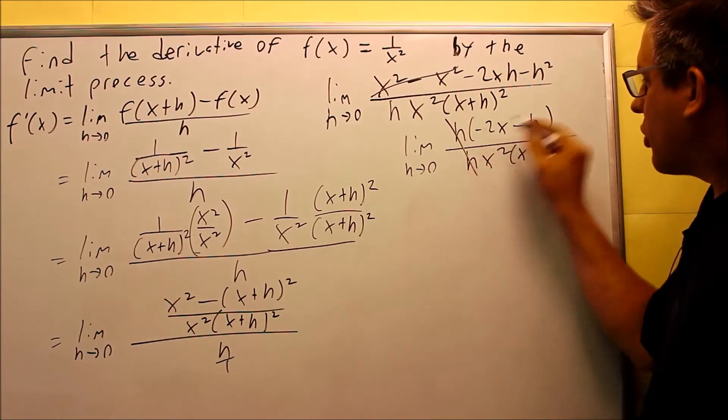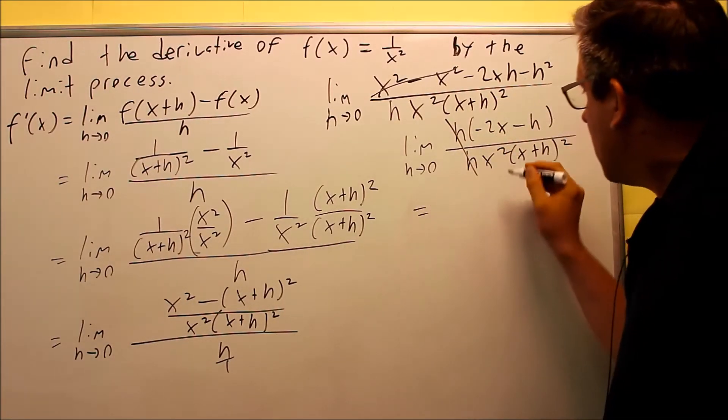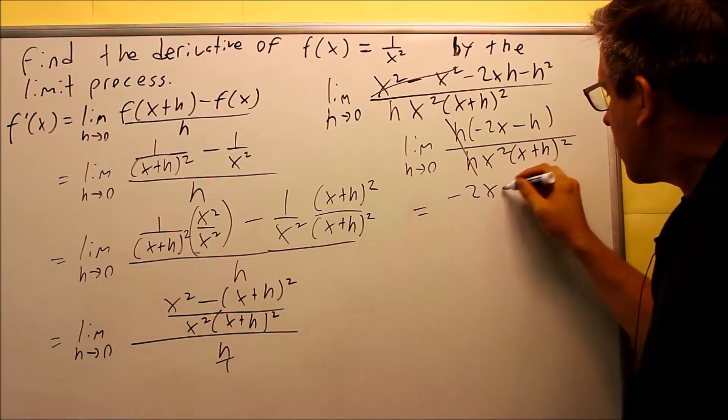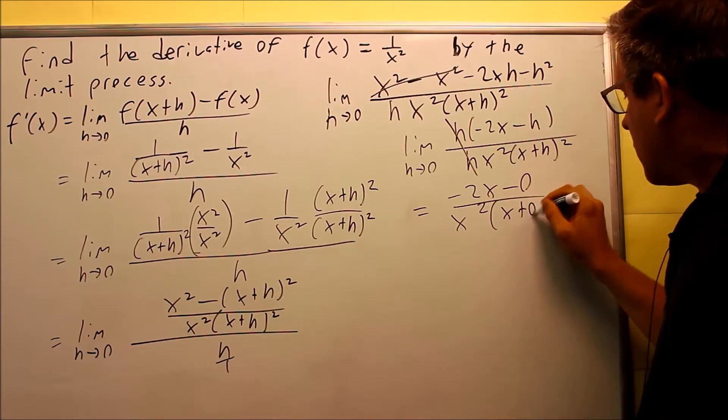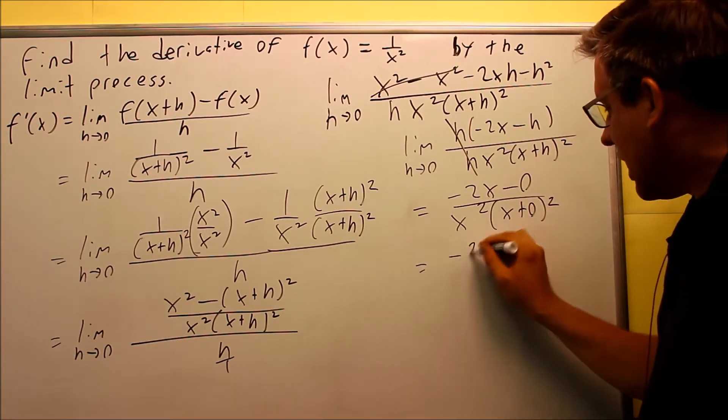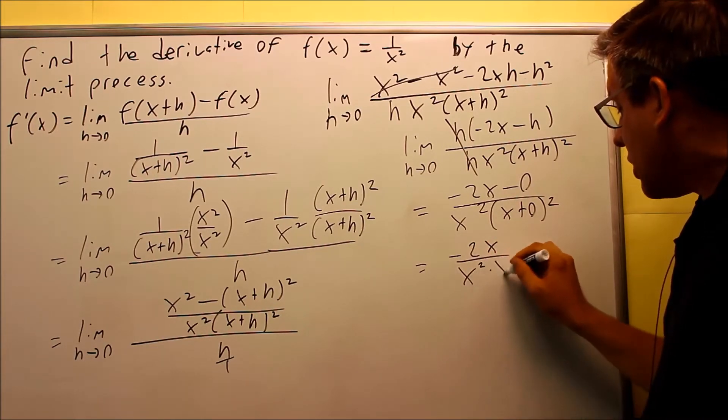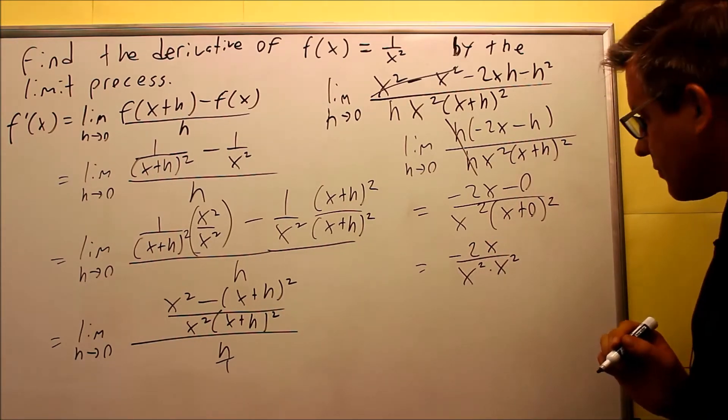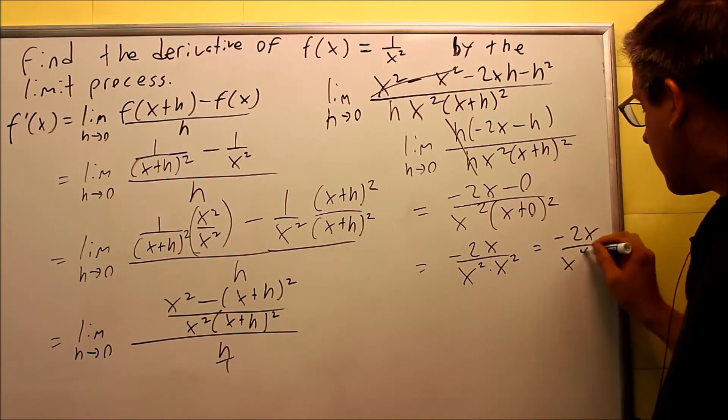So what I'm left with is an expression. I actually don't need the limit anymore, because I'm just going to plug in zeros now. Since the h's are gone, I can now get the answer by plugging in zeros. So I'm going to do negative 2x minus zero. On the bottom, I have x squared times x plus zero. And then on top, I'll get negative 2x. On the bottom, I have x squared times x squared.